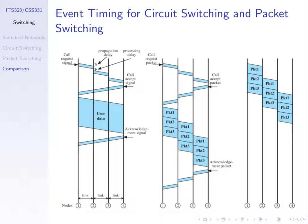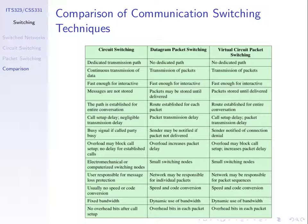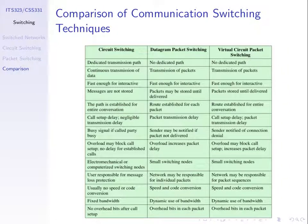That concludes our coverage of switching. We've looked at the different types of switching and some performance comparisons. There's a summary table of differences between them for reference. The next topic is routing: given that we're sending data from source to destination, how do we choose a path through the network?